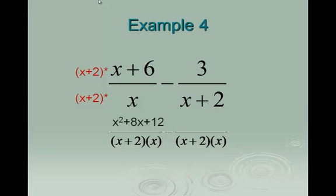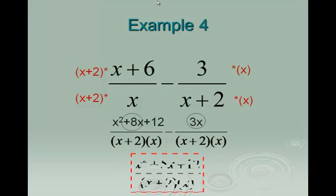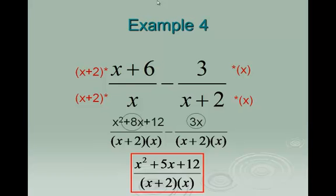On the second fraction, the new factor to multiply by is x. That changes the top to 3x. Now we look for like terms to combine. We have 8x and 3x, and we're combining them by subtracting: 8x subtract 3x is 5x. So x squared plus 5x plus 12 is our new top for the final answer, over the common denominator x plus 2 times x.